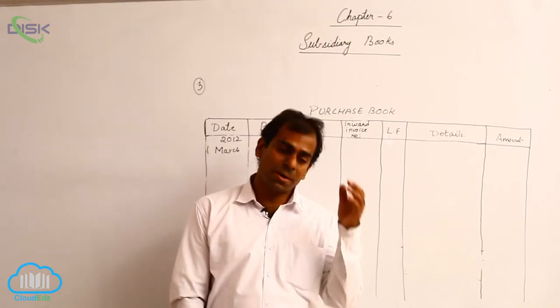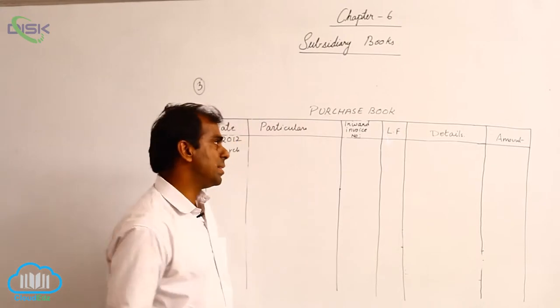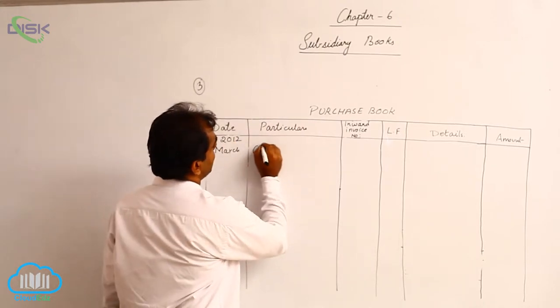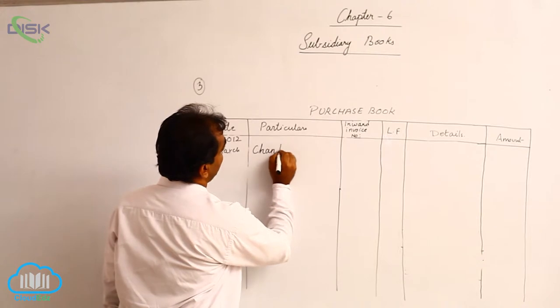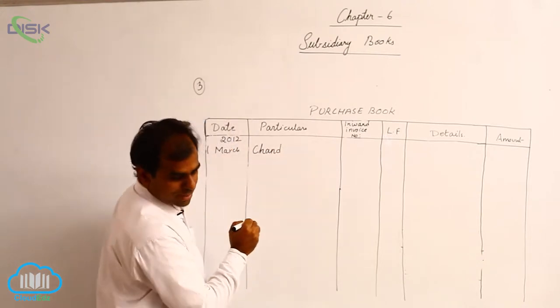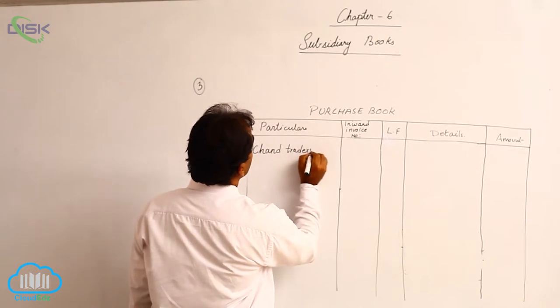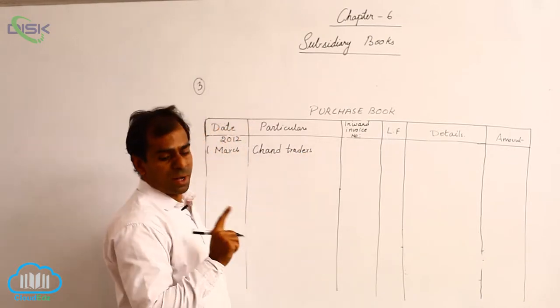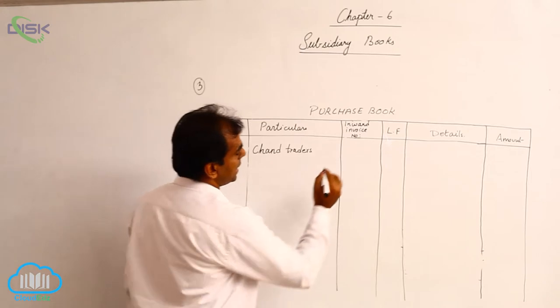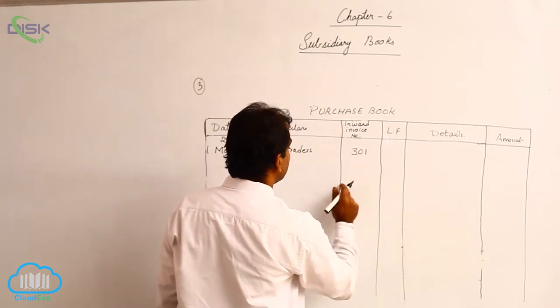So how to record this transaction? First, we will write the name of the supplier, which is Chand Traders. We are also given the invoice number, so we will enter that invoice number in the inward invoice column.